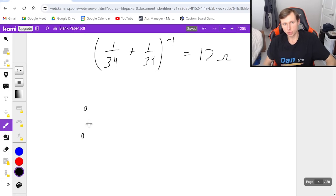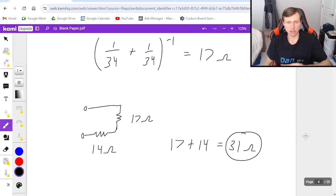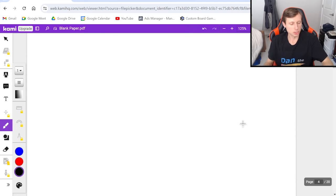So then we just have two resistors, a 17 ohm here and a 14 ohm here. We just have to add these up. These are in series, so it's just 17 plus 14, and that's going to give us 31 ohms, and that's the answer for the second one. Okay, just one more to go. This will be the hardest example.